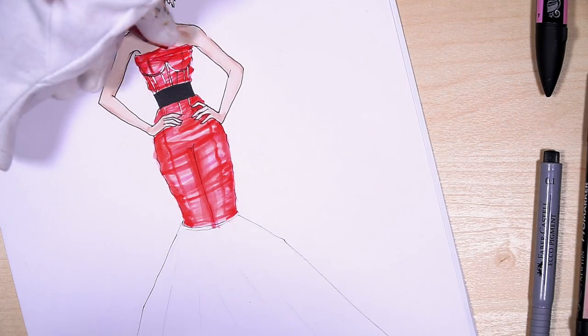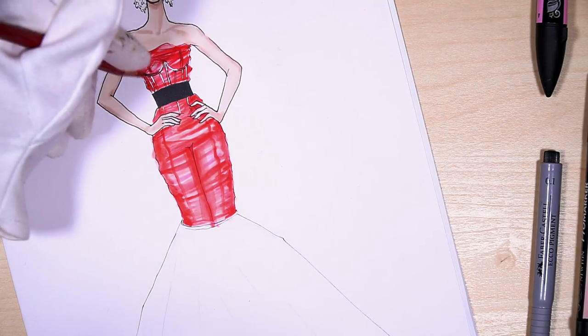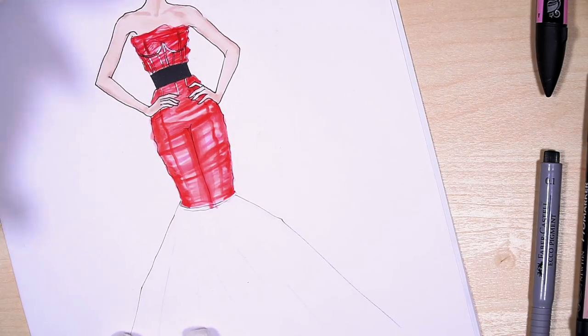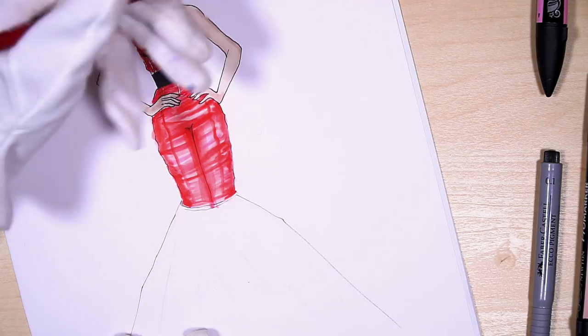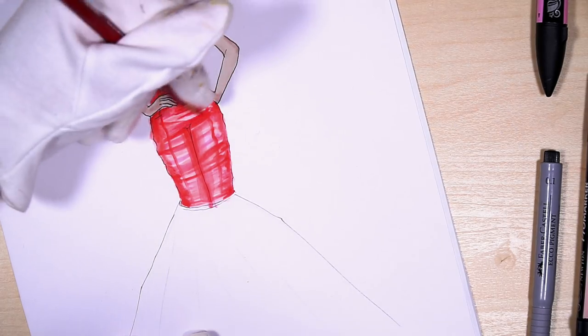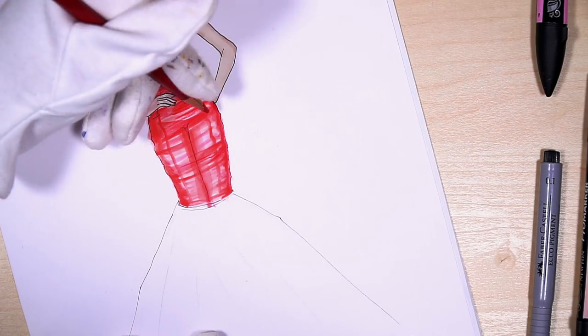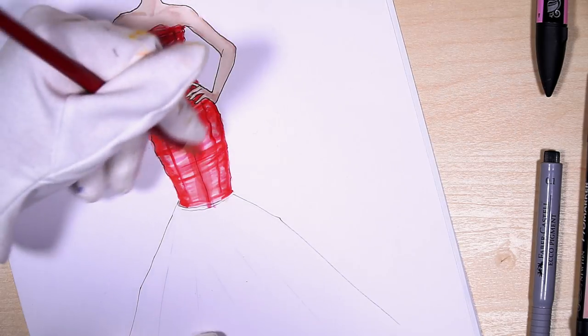Next I'm using red pencil and making some strokes again, similar to ones that we made with markers. Pencil on a light marker surface is really good to show chiffon. If you watched any other F-Sketcher tutorials with chiffon before, you probably remember that we always use pencil.